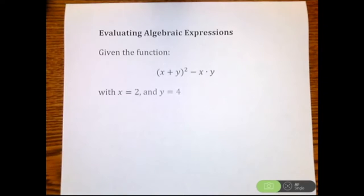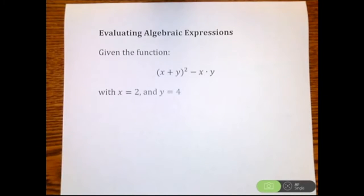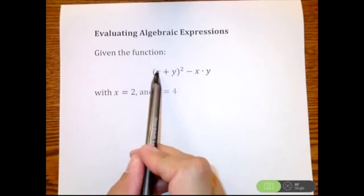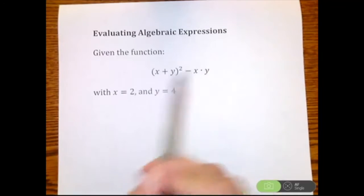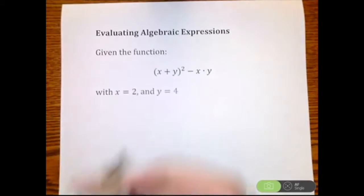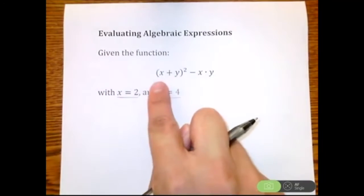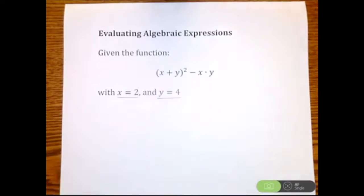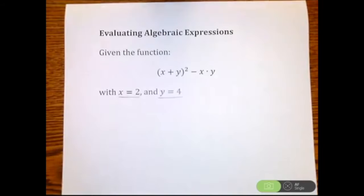All right, let's talk about evaluating algebraic expressions. So if you've watched my order of operations video, this isn't going to be too far of a stretch, just one extra bit. So here, given the function (x+y)²-x·y, with x equals 2 and y equals 4. So I'm telling you that x is 2 and y is 4. And we have this algebraic expression with x's and y's in it, and I'm wanting you to evaluate this algebraic expression.